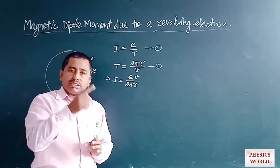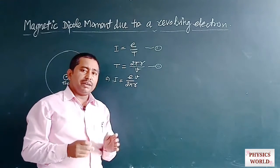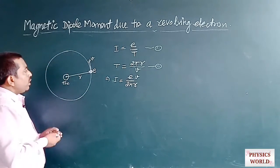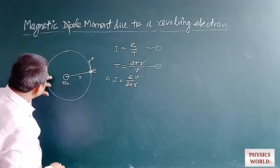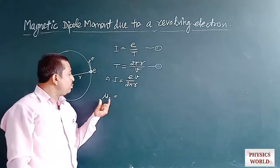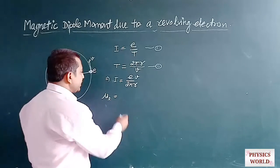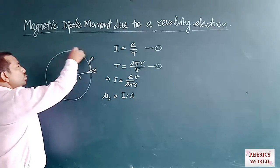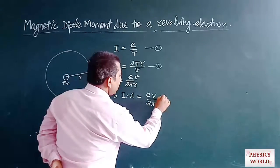When there is a current along a circular track or any current loop, it possesses some dipole moment. The magnetic dipole moment is defined as the product of the current flowing through the circular loop multiplied by the area of the loop. The area of the circular loop is πR². So the magnetic dipole moment μL equals I × πR² = (EV / 2πR) × πR².